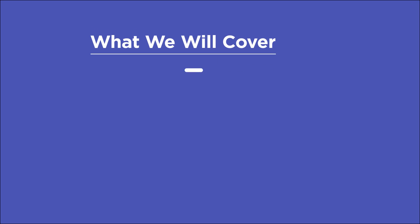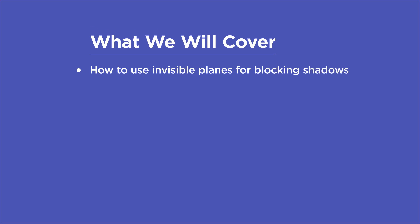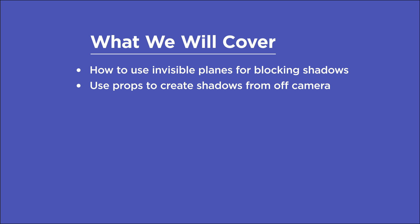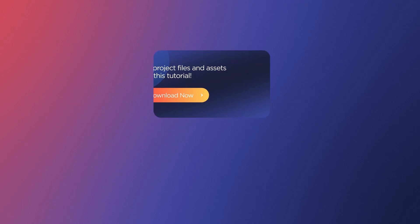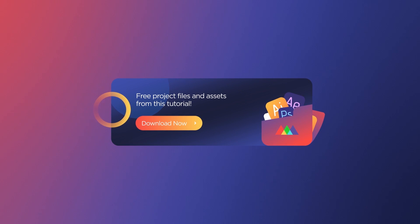In this video, you'll learn how to use invisible planes to flag off lights and create areas of shadow, use props to create shadows from off-camera, add gobo patterns to lights, alter the quality of shadows by either choosing hard or soft shadows, and create shadows with fog volumes and VDBs. If you want more ideas to improve your renders, make sure to grab our PDF of 10 tips in the description. Now let's get started.